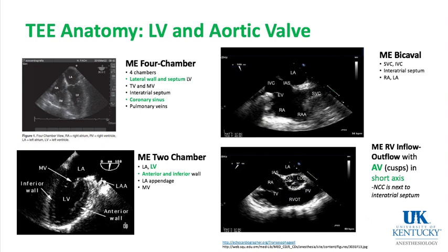The mid-esophageal RV inflow-outflow view shows the aortic valve in short axis in the middle. Importantly, you can see all three cusps of the normal aortic valve: the non-coronary cusp lies against the interatrial septum, the most anterior is the right coronary cusp, and the left coronary cusp is labeled LCC. Note that the non-coronary cusp is next to the interatrial septum.